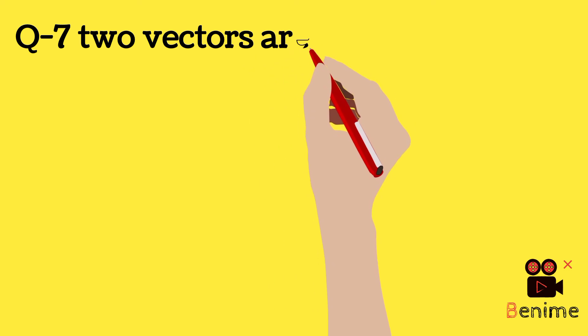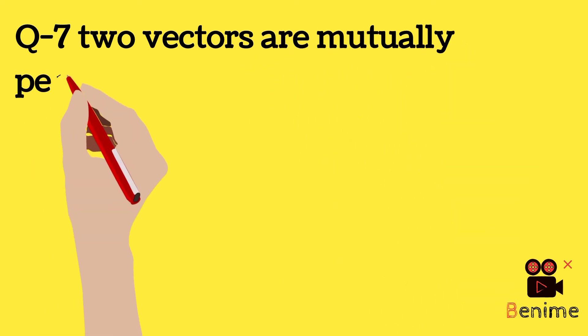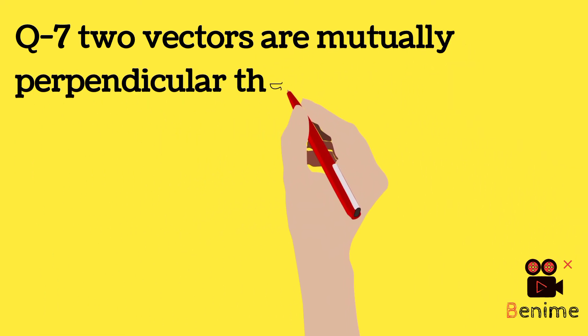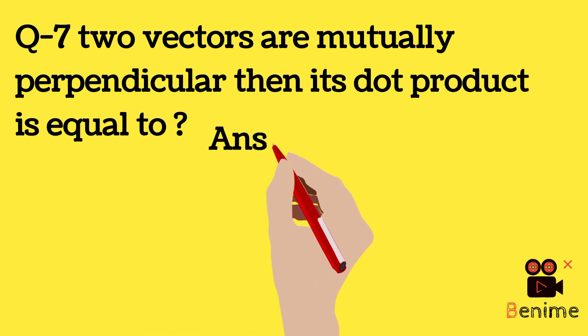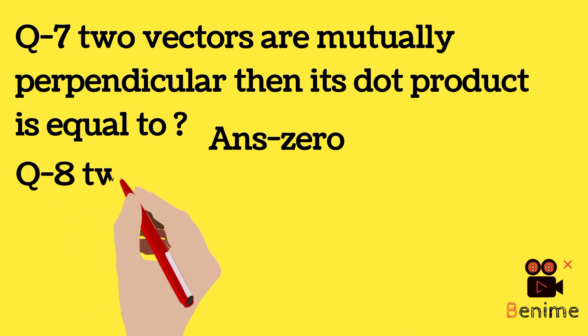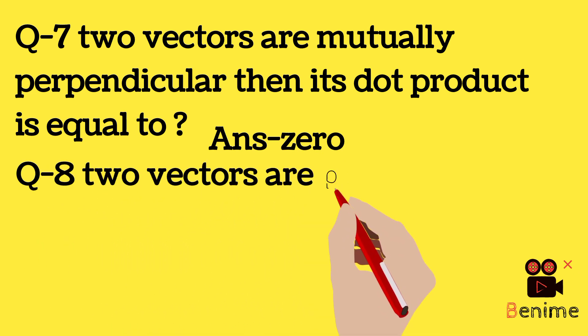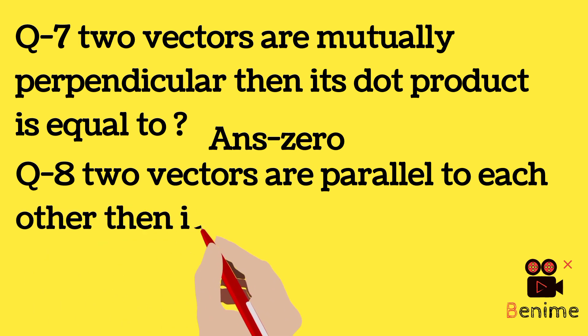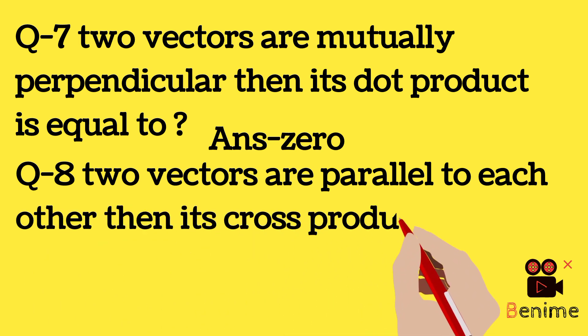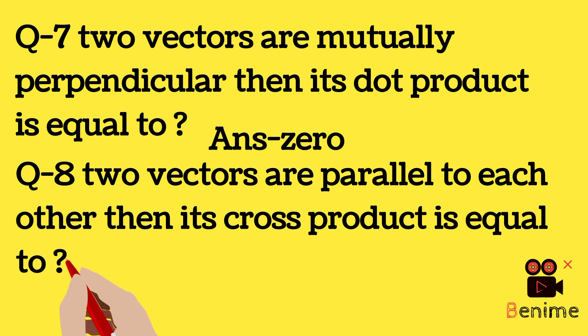Two vectors are mutually perpendicular, then its dot product is equal to zero. Two vectors are parallel to each other, then its cross product is equal to zero.